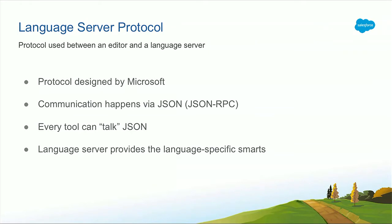A language server protocol is basically a communication protocol between your tool and a language server, which is where you have cool features like go-to-definition, autocomplete, all of those things. This protocol was created by Microsoft. It's an open protocol, constantly being developed and maintained, and the communication happens in JSON. This is very powerful because every tool uses a different language - Sublime has its own plugin language, IntelliJ or Eclipse uses Java, Atom or VS Code is JavaScript. But every single language is able to communicate using JSON. All of the smartness and cool features are at the server level, not coded into the plugin, so it's easily portable.